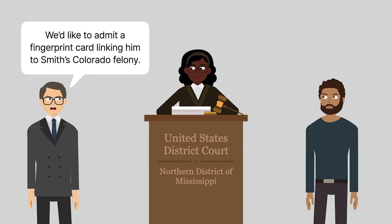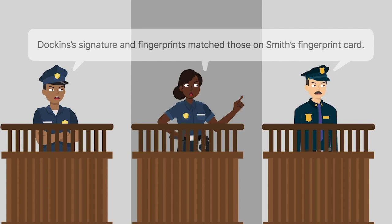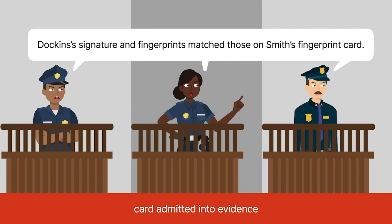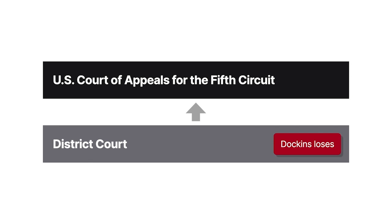At trial, multiple police officers testified that Dawkins' signature and fingerprints matched those on the card, and the card was admitted into evidence. The court ultimately convicted Dawkins, who appealed to the Fifth Circuit. Dawkins claimed that the prosecution failed to establish he was a convicted felon because the fingerprint card was erroneously admitted.